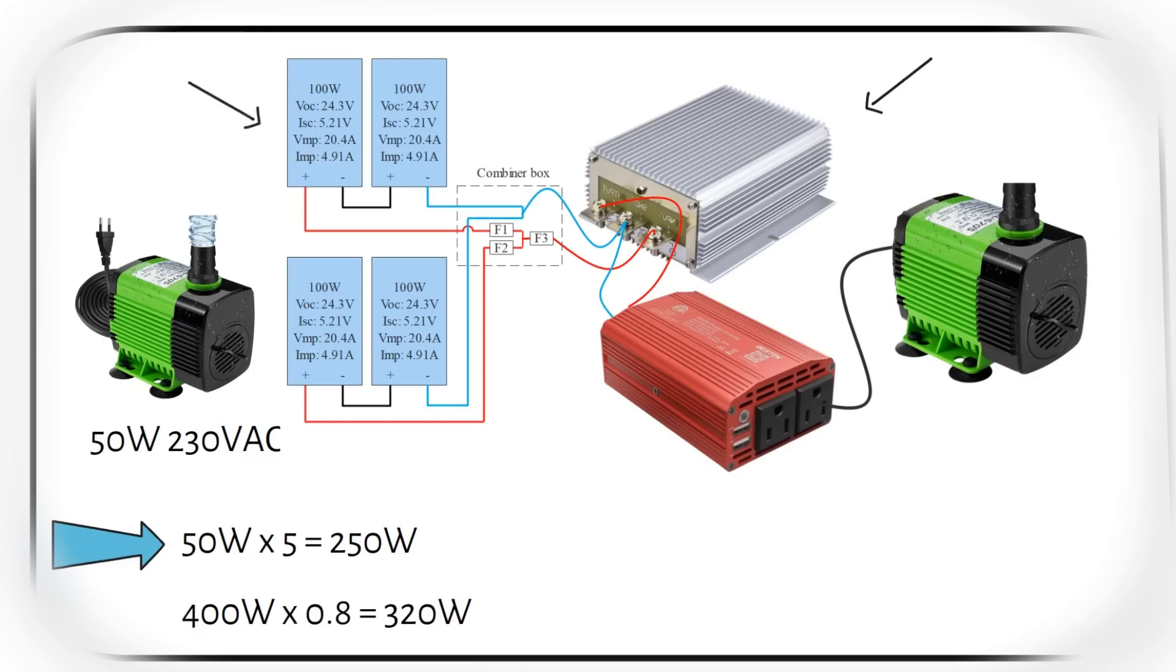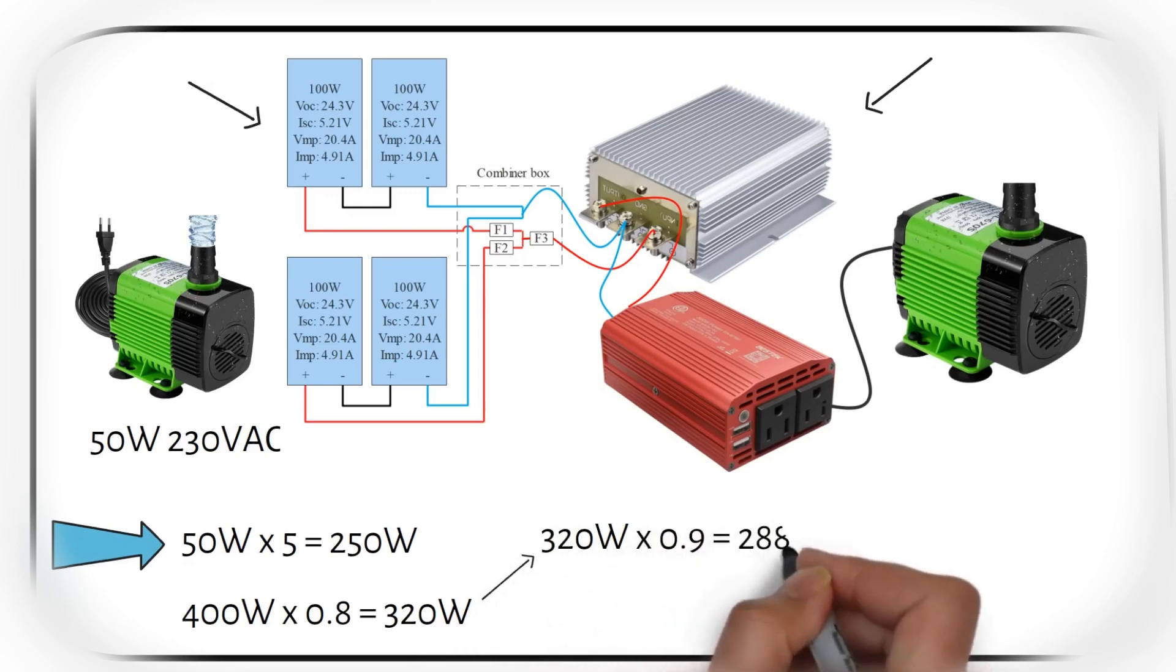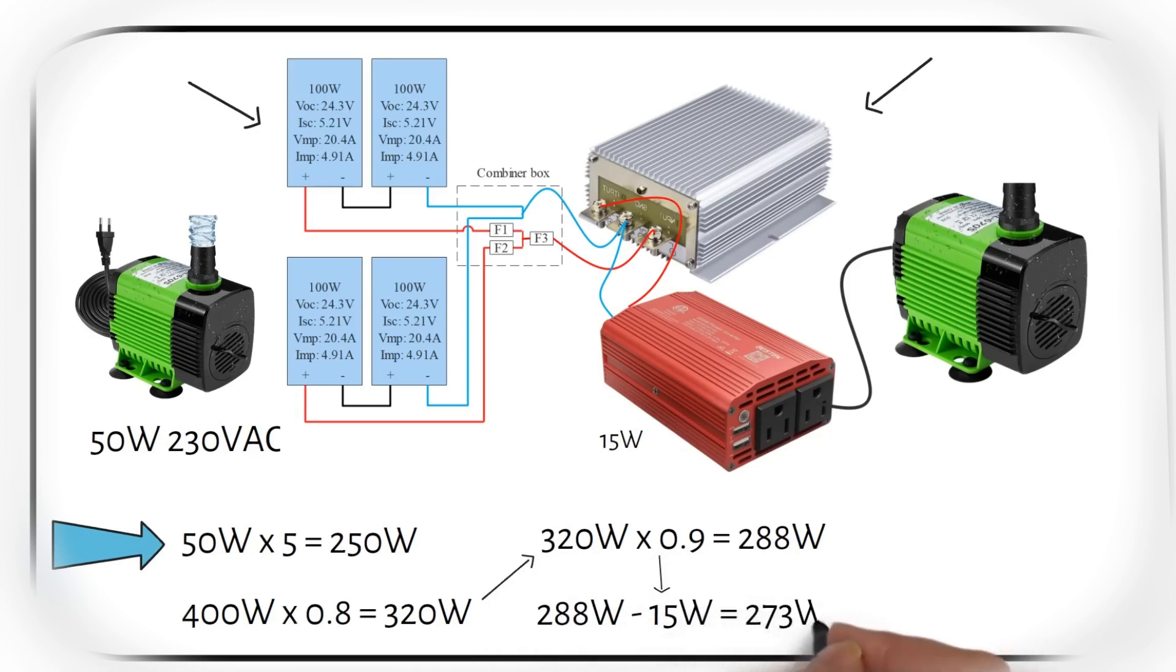The efficiency of the buck converter is 90%, so we get 288 watts on the output. The 300W inverter uses 15 watts of idle consumption. Now we have 273 watts left. Then the inverter has an efficiency of 90%. We are only left with 245 watts at the output, enough to handle the 50W pump and the surge current. As you probably have already noticed, it's better to use a DC pump instead of an AC pump to increase efficiency and reduce costs.